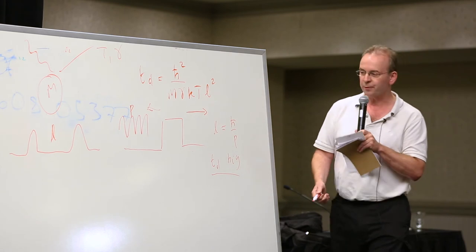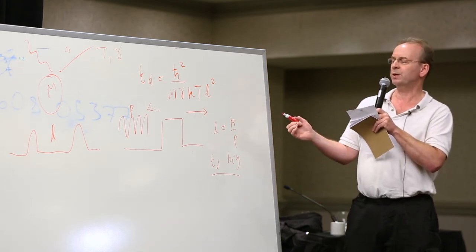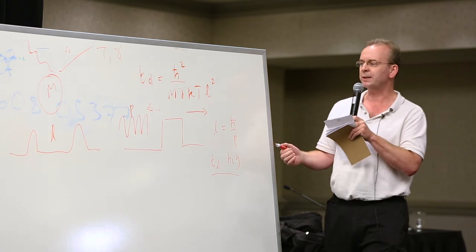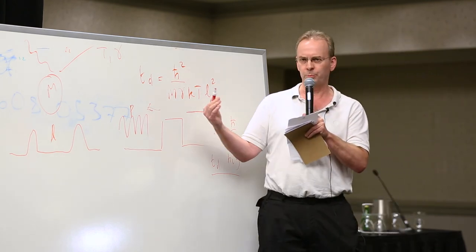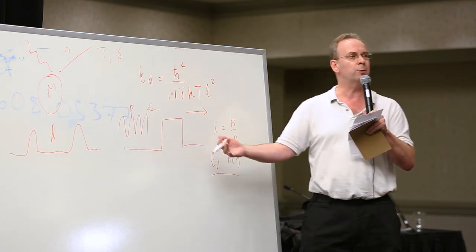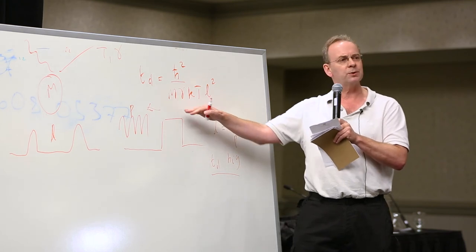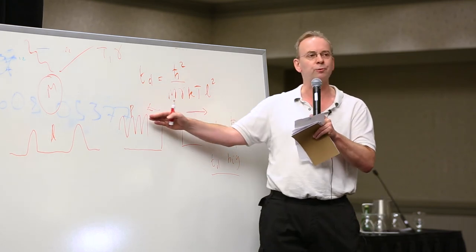Now this also applies to the quantum Zeno effect, which you can show quite easily is equivalent to, for a point particle system, having a complex potential. In the quantum Zeno effect you have a complex potential here—the reflected stuff gets suppressed but you also get reflection.